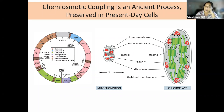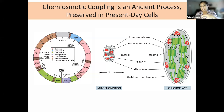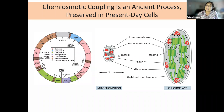Looking at mitochondria and chloroplasts, you'll see similarities: circular DNA like bacterial DNA and inner and outer membranes in both cases. Both have an inner membrane space - a third compartment with a different structural membrane. In mitochondria that's the matrix; in chloroplasts it's the thylakoid membranes, which are the site for energy production.